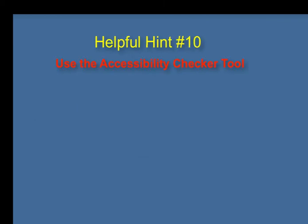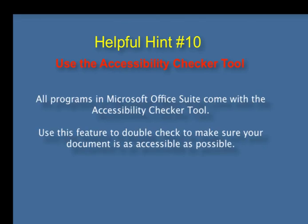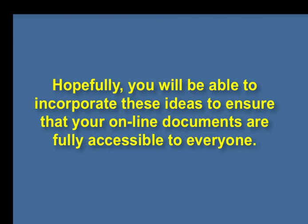And finally, helpful hint number ten: use the accessibility checker tool. All of the programs in Microsoft Office Suite come with the accessibility checker tool. You can use this feature to double check to make sure your document is as accessible as possible. Hopefully, you will be able to incorporate these ideas to ensure that your online documents are fully accessible to everyone.